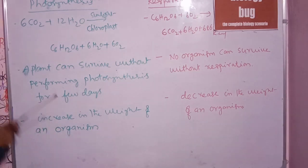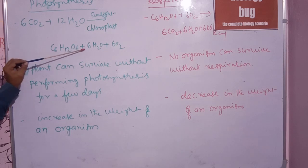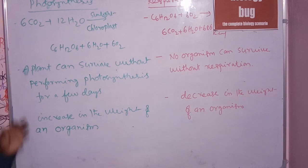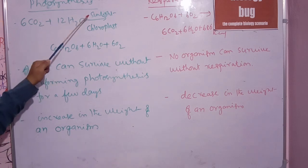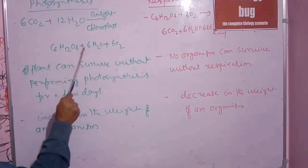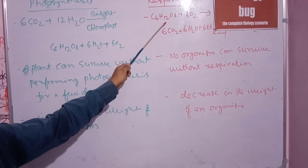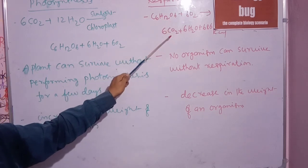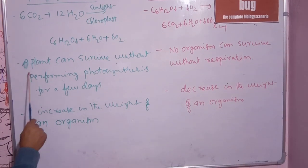The equation for photosynthesis is: 6CO2 + 12H2O → (sunlight, chlorophyll) → C6H12O6 + 6H2O + 6O2. Carbon dioxide and water, with the help of sunlight and chloroplast, produce carbohydrates, water, and oxygen. The respiration equation is: C6H12O6 + O2 → CO2 + H2O + energy. So energy is released in respiration.